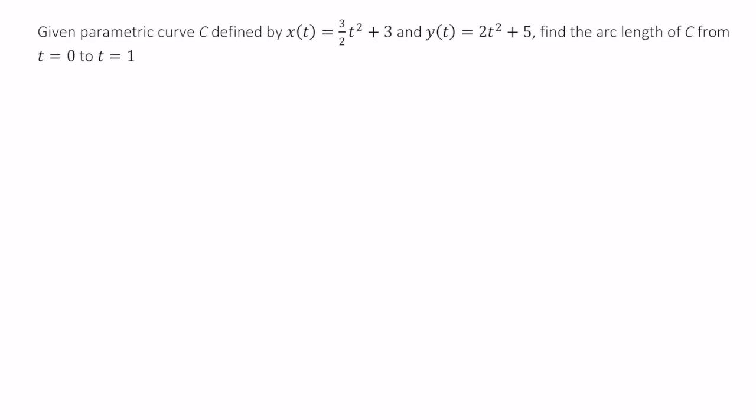So recall that arc length can be computed using the integral from a to b of the square root of dx over dt quantity squared plus dy over dt quantity squared dt.